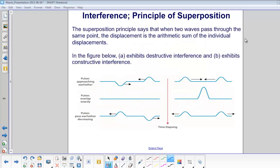The superposition principle says that when two waves pass through the same point, the displacement is the sum of the individual displacements. So if we have a positive displacement and a negative displacement that are exactly equal, we will have zero displacement. And they will continue on as if nothing happened.